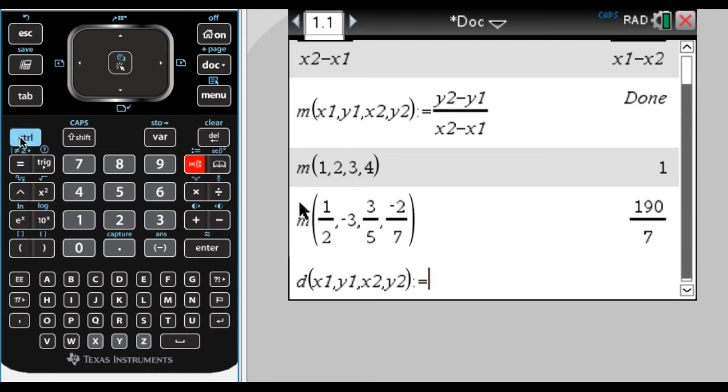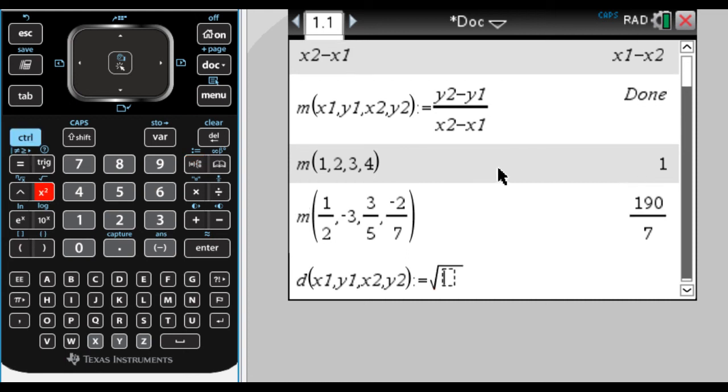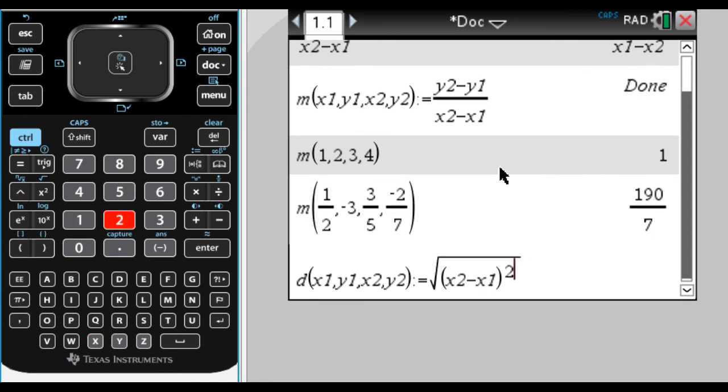Now I'm going to type in the distance formula. So control, and x squared gives me a radical. And now I want x2 minus x1, and I'm going to square it. And then make sure you're outside or not in the exponent anymore. So arrow to the right, or you can hit tab from in there. And then plus, open parentheses, y2 minus y1, get out of the parentheses, squared. And I'm going to press enter, it's going to say done.